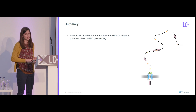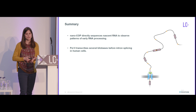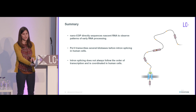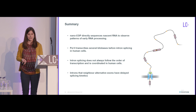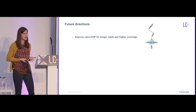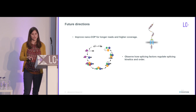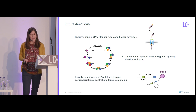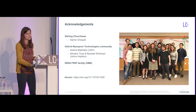To summarize: NanoCOP directly sequences nascent RNA to observe patterns of early RNA processing. RNA Pol II transcribes several kilobases before intron splicing in human cells. Intron splicing doesn't always follow the order of transcription and tends to be coordinated in human cells. And introns neighboring alternative exons tend to have delayed splicing kinetics. Looking forward, we hope to get longer reads and higher coverage with NanoCOP, allowing us to look at longer-range interactions and individual genes. We also hope to examine different splicing factors and see how they affect splicing kinetics and order, and to perturb transcription directly to see how it impacts splicing.